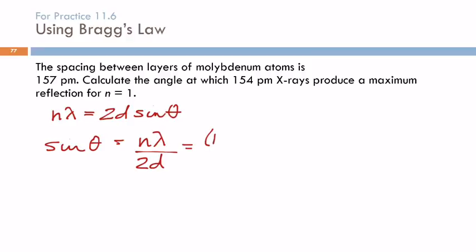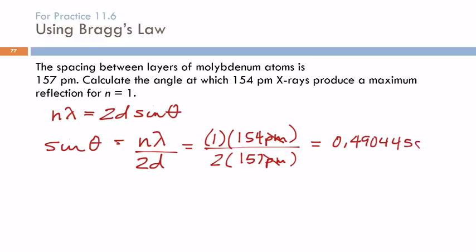Well, they told us that n was 1. Lambda is the wavelength of the x-rays. So that's 154 picometers. And then we've got 2 in the denominator. And d is the distance between the layers, 157 picometers. As long as these units are the same, they're going to cancel out and we don't have to do any conversions. So we get 154 divided by 2 divided by 157. So the sine of theta equals 0.49044586.